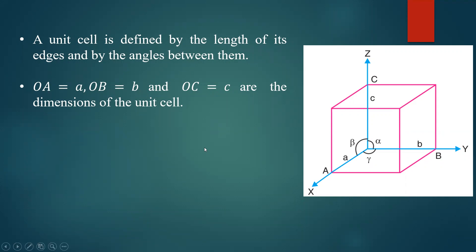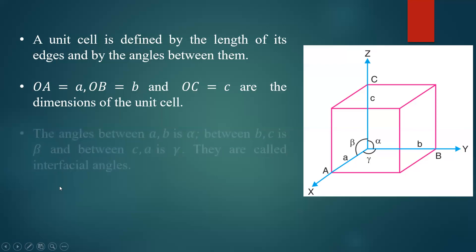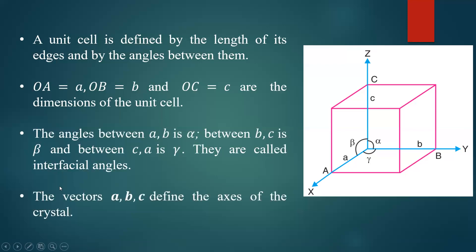The interfacial angles alpha (α), beta (β), and gamma (γ) are also defined: α is the angle between b and c, β is the angle between a and c, and γ is the angle between a and b. Based on a, b, c and α, β, γ, you can identify the structure of the crystal. The unit cell is defined using these three edge dimensions and interfacial angles. The axes a, b, c define the crystal axes.